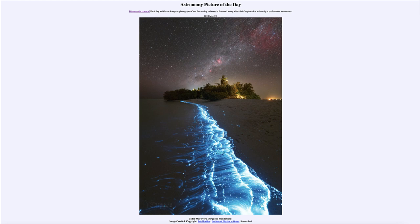So what do we see here? We see our Milky Way up in the sky, and down below on the ground in the water we see a glowing turquoise color. What we're actually seeing is called bioluminescence — a glow due to living organisms. It's a specific type of plankton that is energized by the waves as they come in, causing them to glow. As those waves crest, we get the extra energy that causes them to glow.